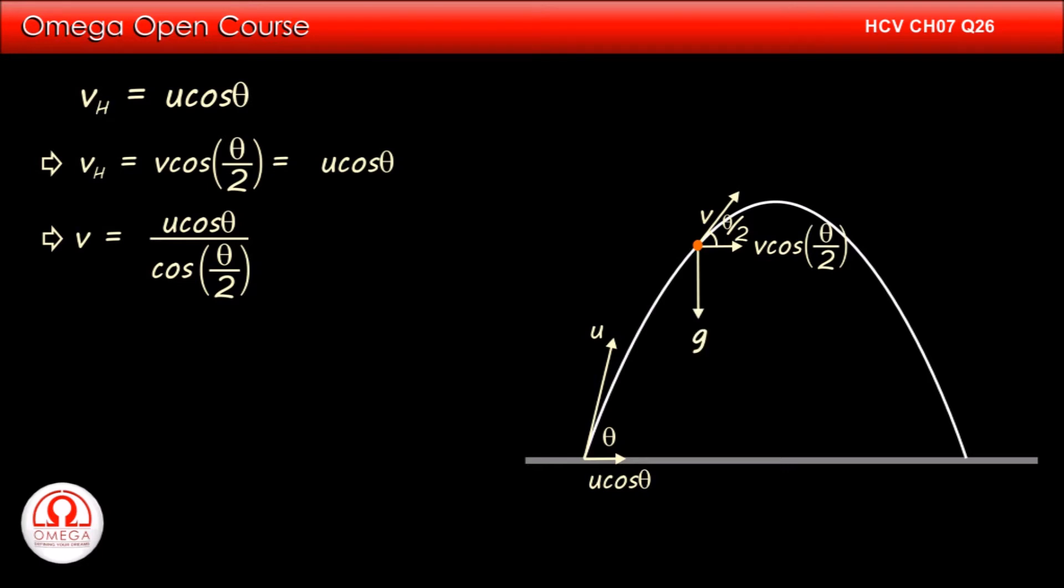The acceleration of the particle is g in downward direction. From simple geometry, we know that the acceleration due to gravity makes an angle theta by 2 with the direction perpendicular to the direction of velocity. Therefore, the component of the acceleration perpendicular to the velocity, i.e. the radial acceleration, is g cos theta by 2.